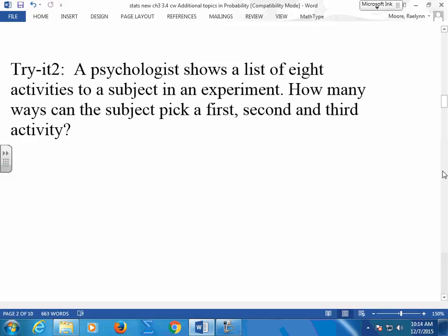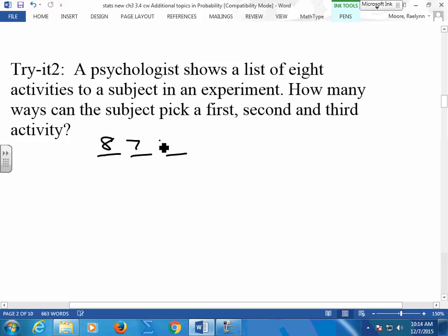So, you guys try this. A psychologist shows a list of 8 activities to a subject in an experiment. How many ways can the subject pick a first, a second, and a third activity? How many different ways can he assign those three activities? Put it in your notes. Give me a number this time. And you have to have a permutation at the same time.